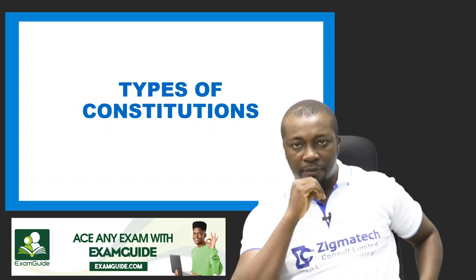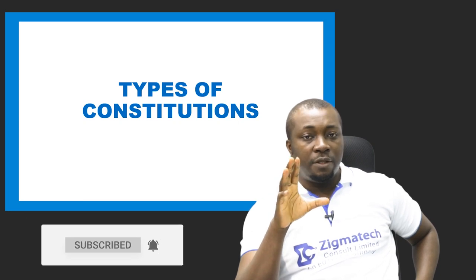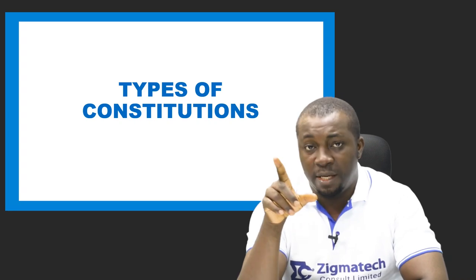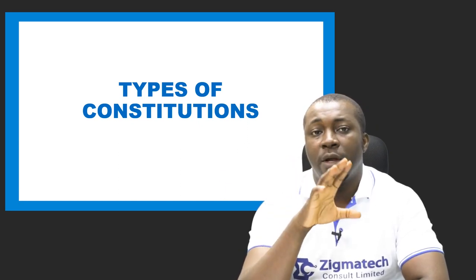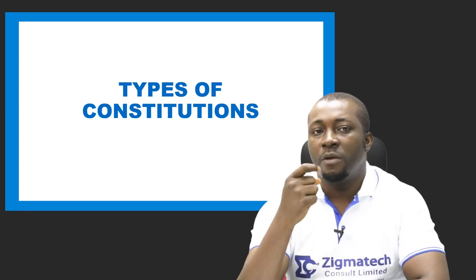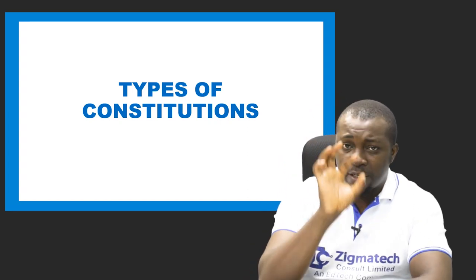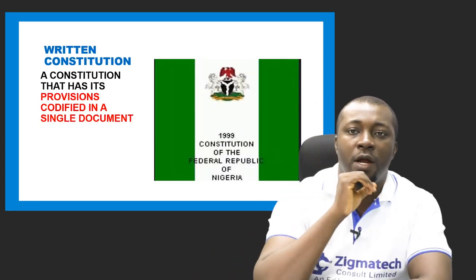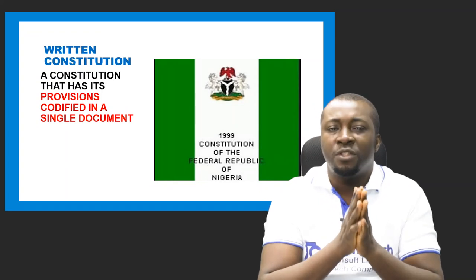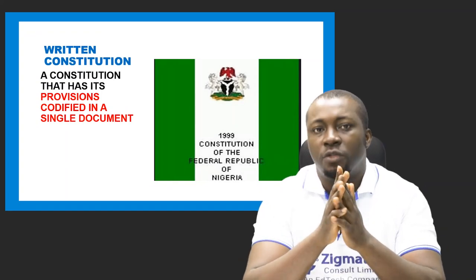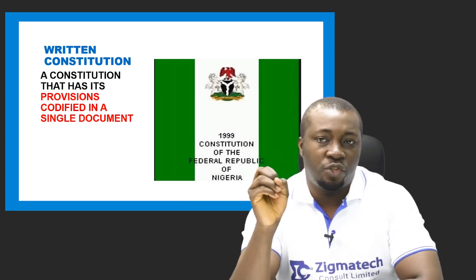Now let's look at the types of constitution. We can classify constitutions based on: codification or documentation, amendment procedures, and the relationship between levels of government. Based on codification, we have a written constitution — a constitution that has its provisions codified in a single document. For example, the 1999 Constitution of the Federal Republic of Nigeria is a written constitution; you can hold it as a book or access it as an app.